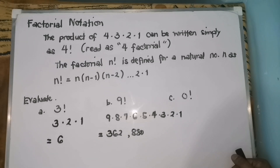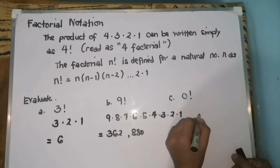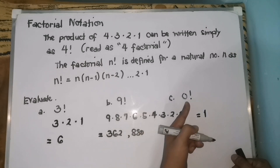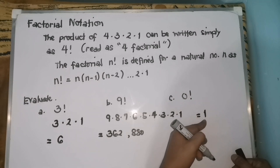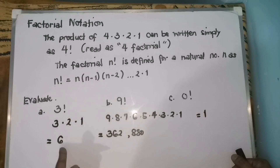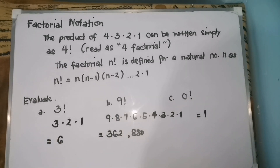How about 0 factorial? 0 factorial is equal to 1, not 0. 0 factorial is defined to be 1 so that certain theorems and formulas can be stated concisely. Remember: 0! = 1, not 0. Similarly, 1! = 1, 2! = 2 times 1 = 2, 3! = 6, and so on.